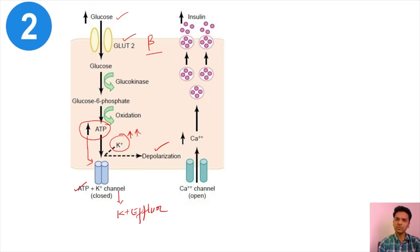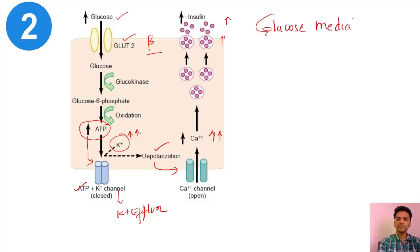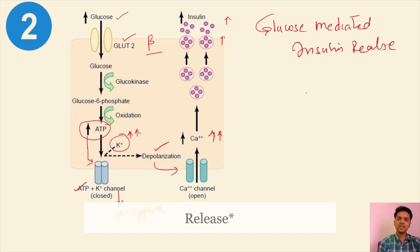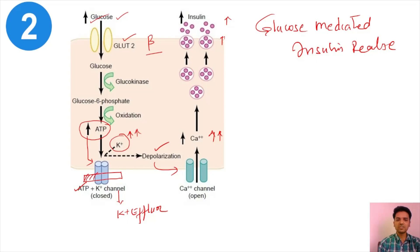When a positive ion accumulates inside the cell, the cell undergoes depolarization. Depolarization opens voltage-gated calcium channels, resulting in calcium influx. Calcium influx causes exocytosis of secretory granules inside the beta cells, which contain insulin — and hence insulin is released. This entire mechanism is called glucose-mediated insulin release.